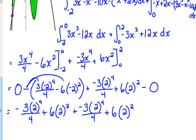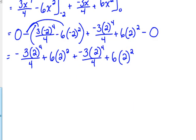Now nothing cancels. But there are 2 of them, it's not squared, there are 2 of them. So, let's see here, we can add negative 3 fourths plus negative 3 fourths. What does that give us? Negative 6 over 4, times 2 to the 4th. And then, we've got 6 times 2 squared plus 6 times 2 squared, that's 12 times 2 squared.